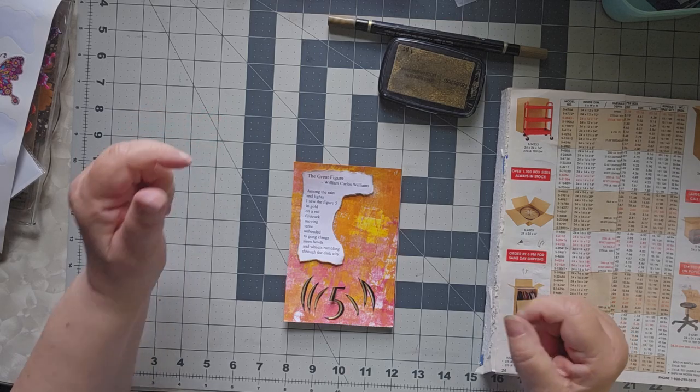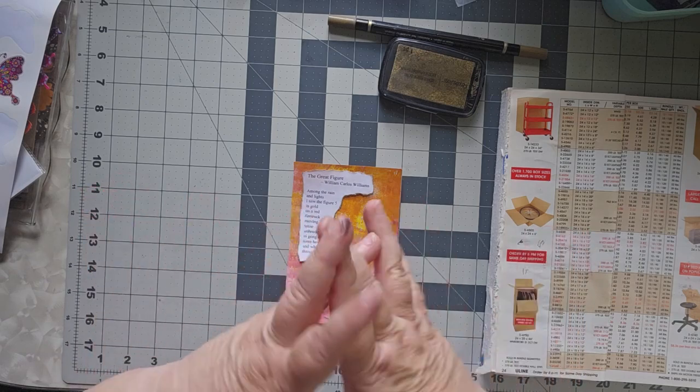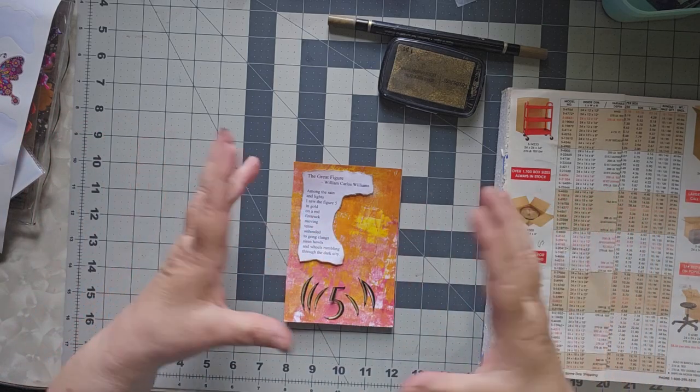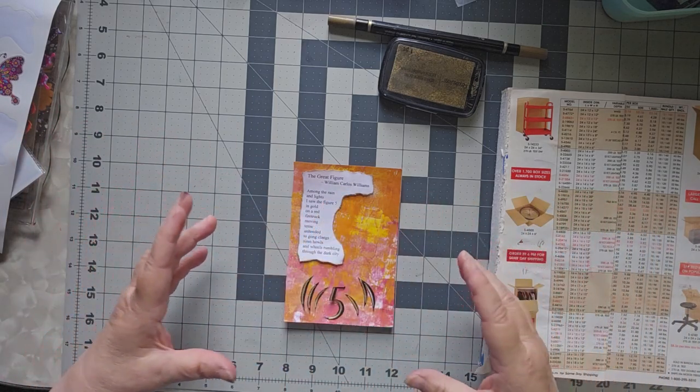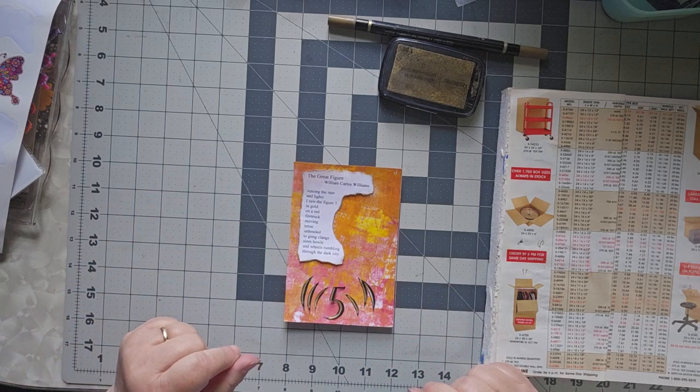And then Charles Demuth, who was a friend of Williams, said, I want to paint that. I need to paint that poem. And so he created a very famous painting. This is my homage to both the poem and the painting.